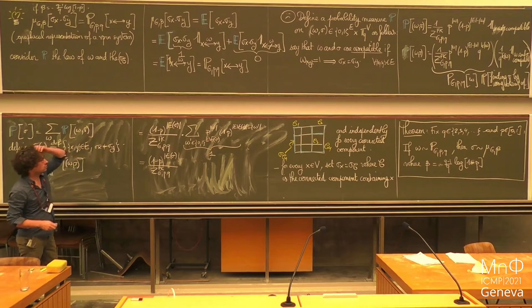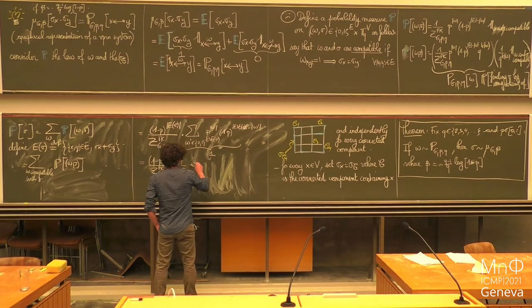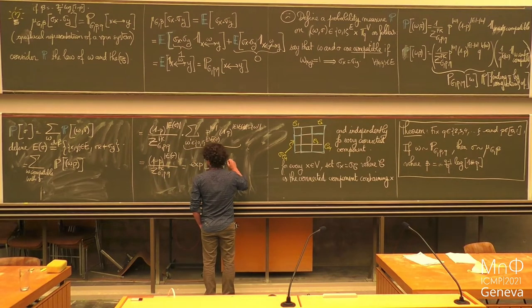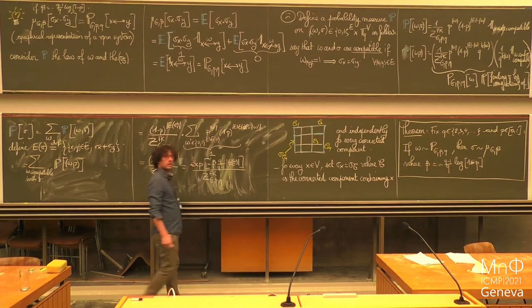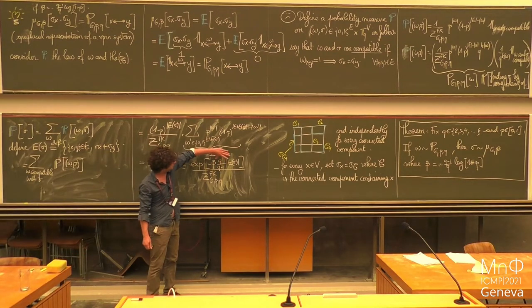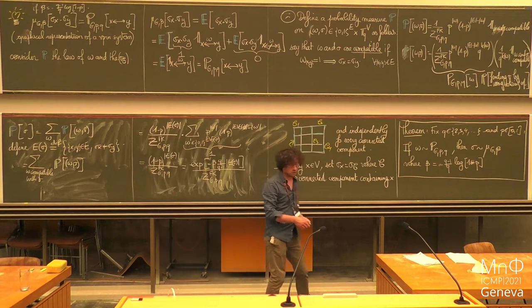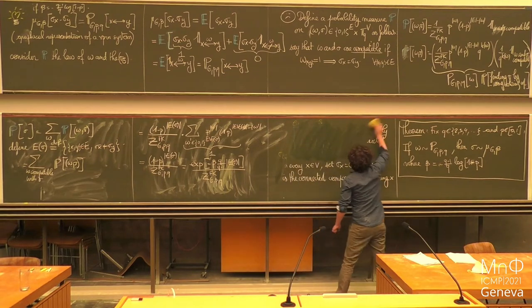At the end, the probability of sigma equals (1-P)^|E(sigma)| divided by Z_{FK,GPQ}. Now I just use what P equals. This is equal to exponential of minus beta times (Q/(Q-1)) times |E(sigma)| over Z. And we are almost there — I just need to prove that this is proportional to the Hamiltonian of the Potts model.